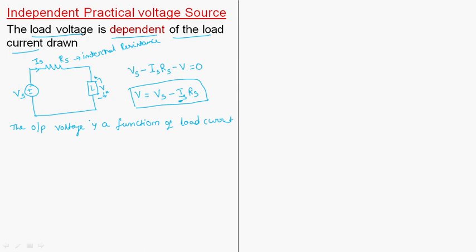This is the practical voltage source. If you draw the VI characteristics, in the ideal case Vs is constant. But in the practical case, with increase in the value of current, the source voltage varies. This is about independent practical voltage source.